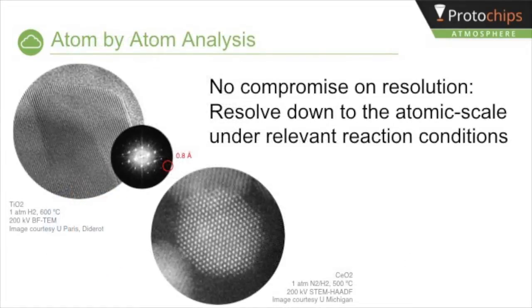Atmosphere maintains instrument resolution under high pressure and temperature, enabling atom-by-atom analysis. The left figure is a bright-field TEM image of titanium dioxide taken at 1 atm of hydrogen and 600 degrees Celsius. An FFT of the image, shown in the inset, indicates a lattice resolution of 0.8 angstroms, demonstrating the ultra-high stability of Atmosphere.